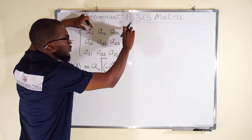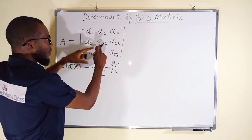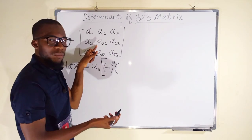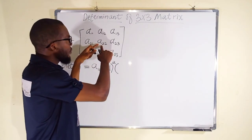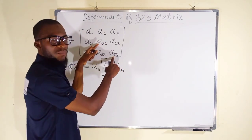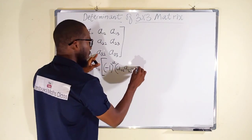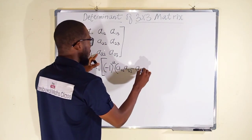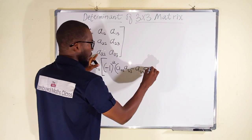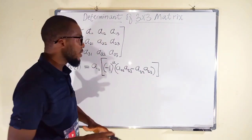This element corresponds to the first row and the first column. Therefore, we strike out that row and column, leaving only these four elements. The determinant we find is for these four elements. We take the top left corner element A22, multiply it diagonally with A33. Then we subtract — we take A32, multiply it diagonally with A23. The whole expression in brackets is what we call the cofactor.